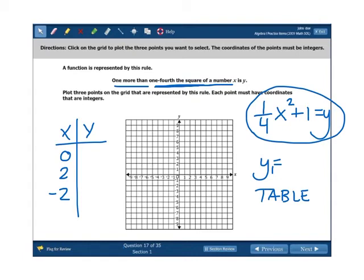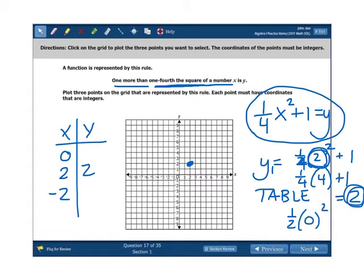So, that means that I am going to say 1 fourth times 2 squared plus 1. 2 squared is 4. 1 fourth times 4 is 1, plus 1 is 2. So, my first point is 2, 2. Let's plug in 0. I don't know why I didn't do that first. 1 fourth of 0 squared plus 1, well, 1 fourth of 0. 0 squared is 0, 1 fourth of that is 0, plus 1 is 1, so 0, 1. Which I believe also happens to be the vertex for this particular parabola.